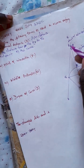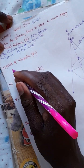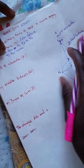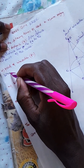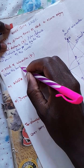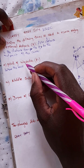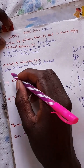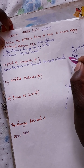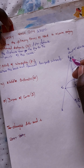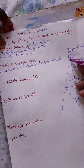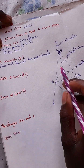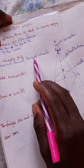Now let's go to the point of intersection. The point of intersection is where the back tangent and forward tangent intersect. You see this one is the back tangent and this one is the forward tangent — the point of intersection is where the back and forward tangents intersect.